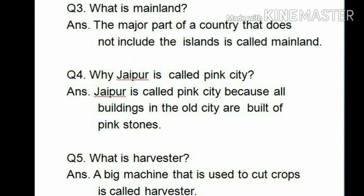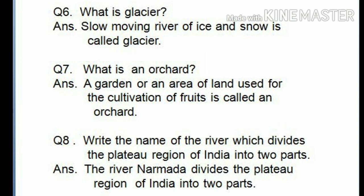Number 5: What is a harvester? Answer: A big machine that is used to cut crops is called a harvester. Number 6: What is a glacier? Answer: A slow-moving river of ice and snow is called a glacier.